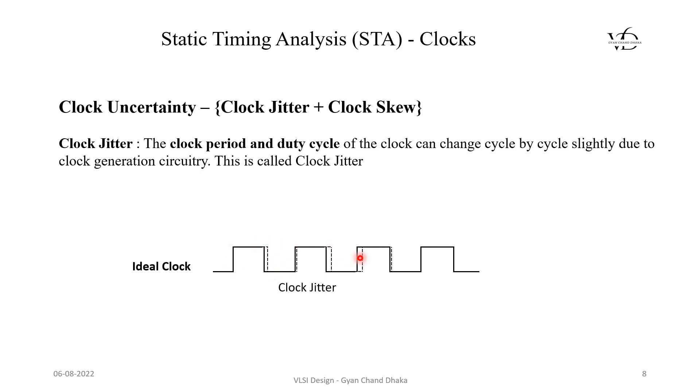You can see that the time period is not exactly matching the ideal clock. The variation in the time period is called clock jitter. Always remember, clock jitter is related to the time period of a clock signal.